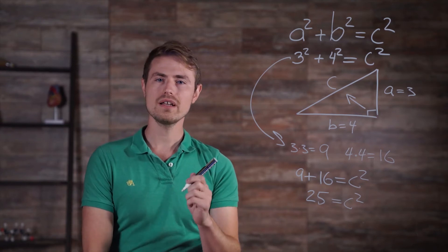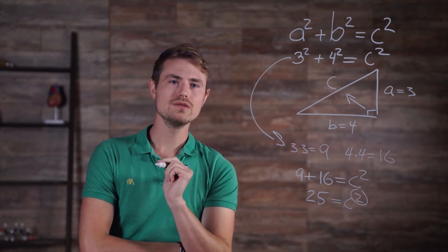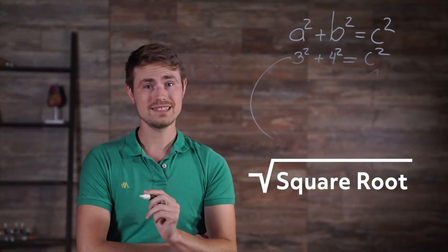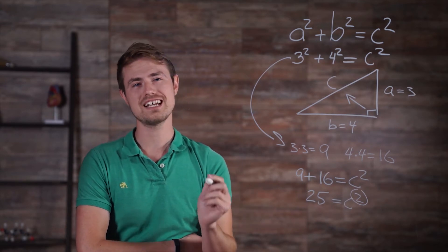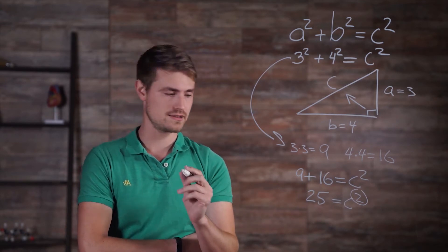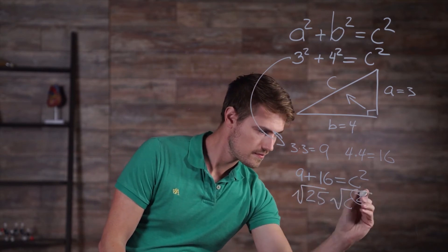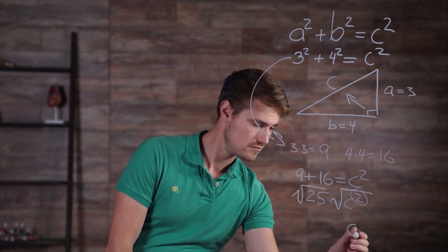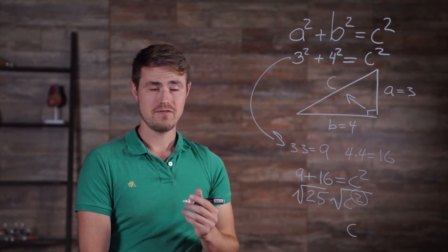So, how can we get rid of that little two? Well, we use the inverse, or opposite, operation of squaring something, and that inverse operation is the square root. Since it's an equation, whatever we do to one side of the equation, we must do to the other. So, I'm going to take the square root of both sides. The square root of c squared is c, and the square root of twenty-five just happens to be five.